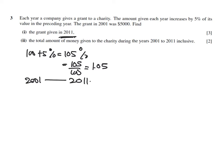Remember, inclusive of 2001. So we have 2001, 2002, 2003, 2004, 2005, 2006, 7, 8, 9, 10 and 11. So therefore, we have 11 years.